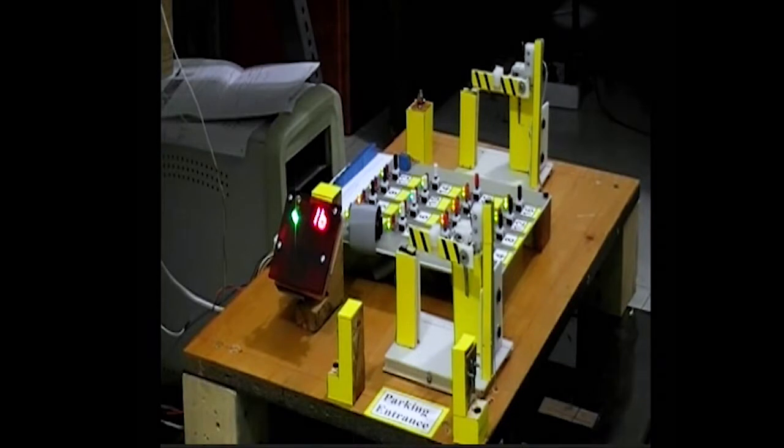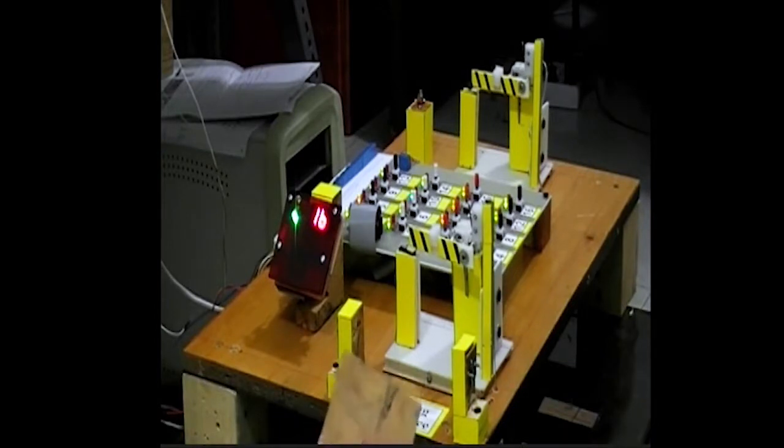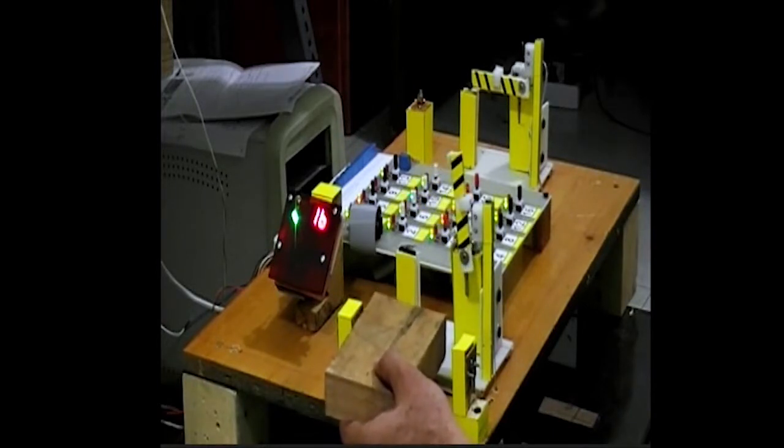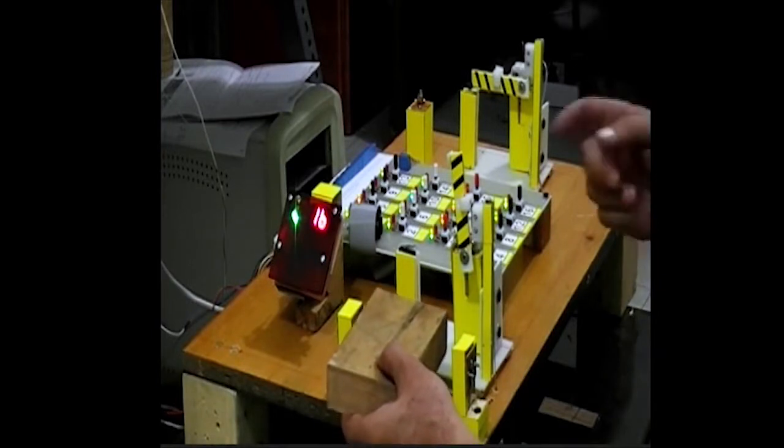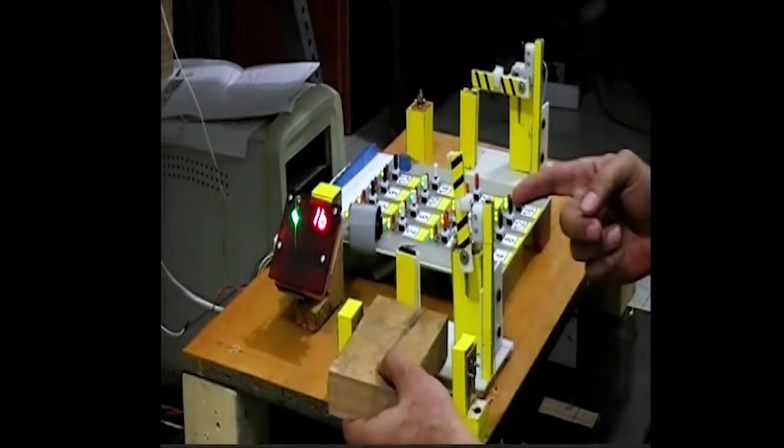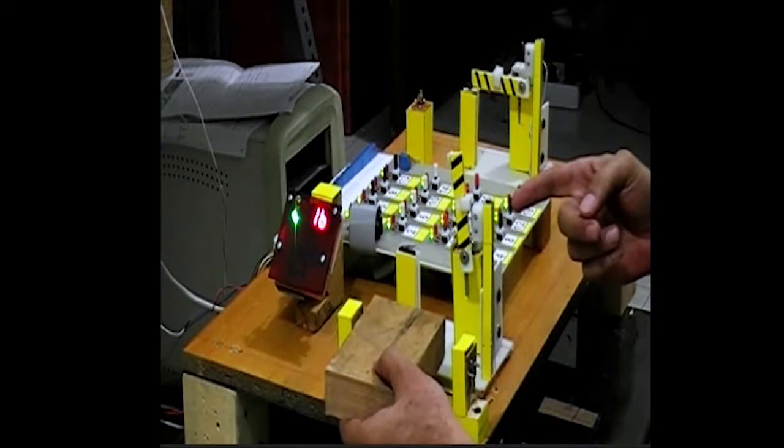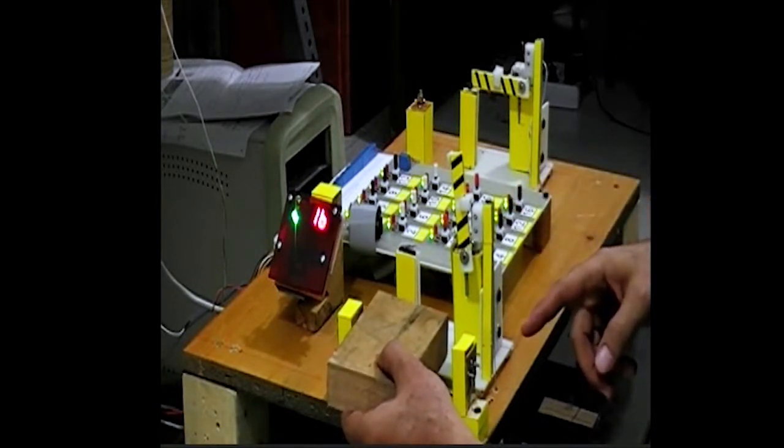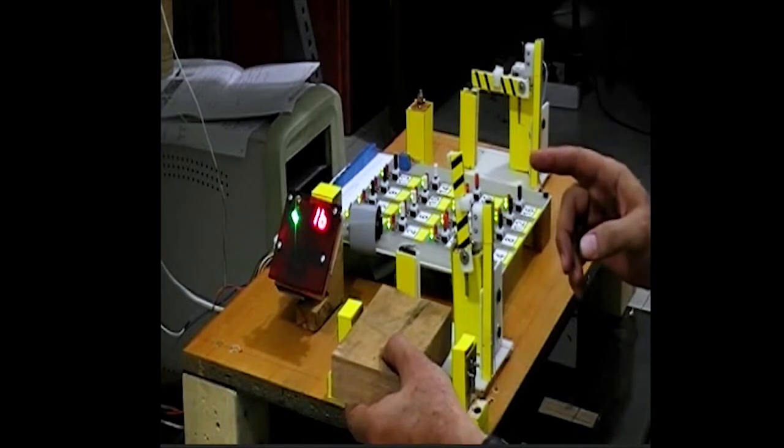When the car comes in, such as this piece of wood, when it gets in front of the infrared system, based on the condition that there is room in the parking spot, the mechanical arm goes up. And as long as the car is in front of the infrared system, it stays up to let the car get in.